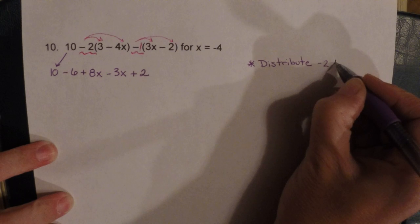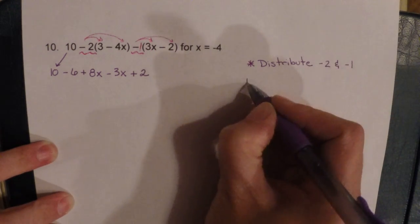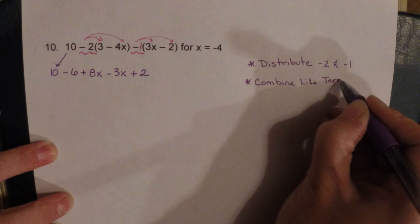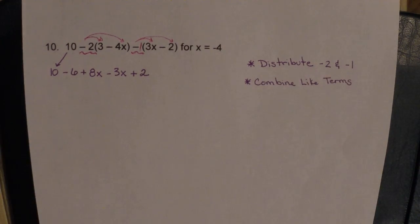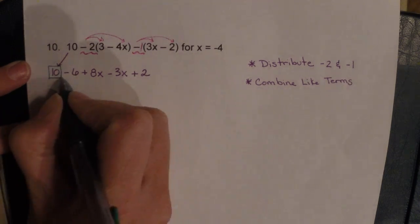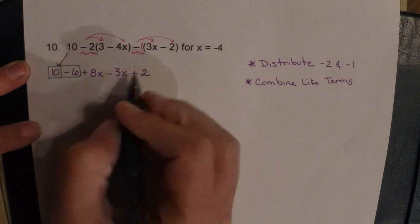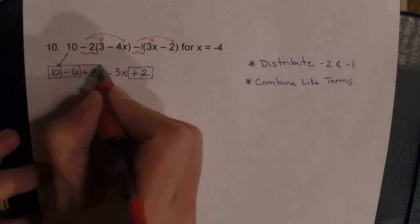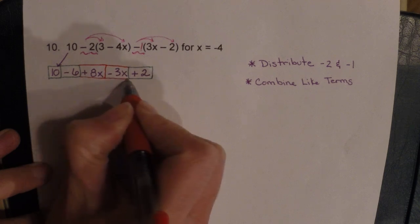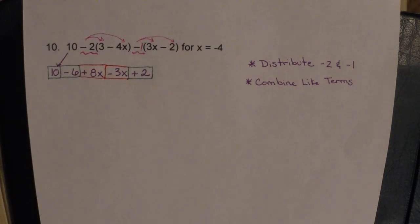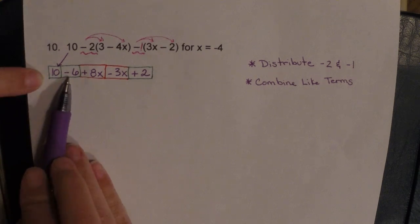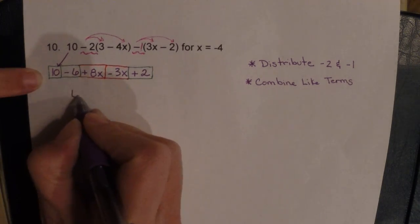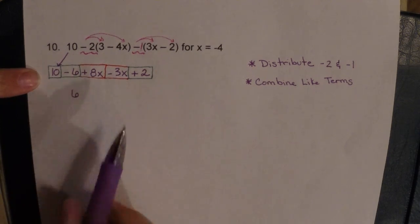Now we're going to combine like terms. The 10 goes with negative six and positive two, and 8x goes with negative 3x. Combining: 10 minus six is four, plus two is six. Then 8x minus 3x is 5x. So the simplified expression is 5x plus six.